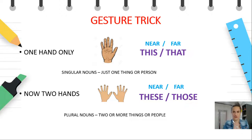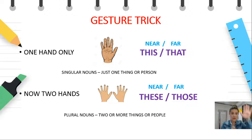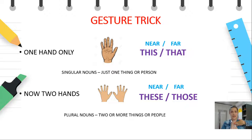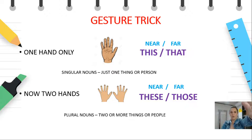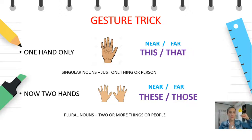I'm going to show you a gesture trick — I learned this from my students. Use only one hand, which means we are talking about singular. When my hand is close, I say 'this,' and when I put my hand out there, I say 'that' — one thing, one hand, far. This is close to me, that is far from me — one hand, only singular. For example: this jacket, that computer, this person, that person, this apple close to me, that apple far from me. We use it only with singular nouns.